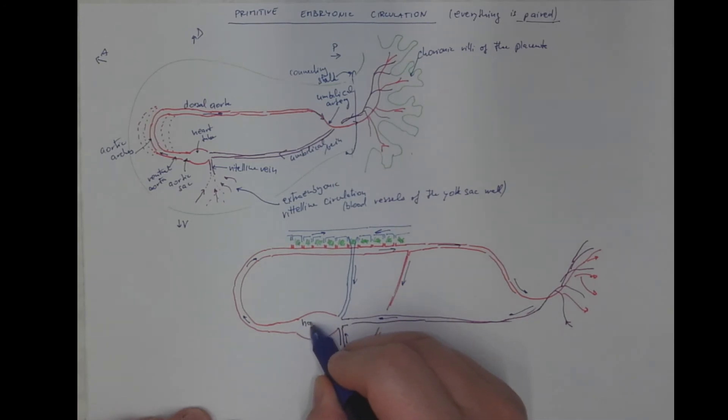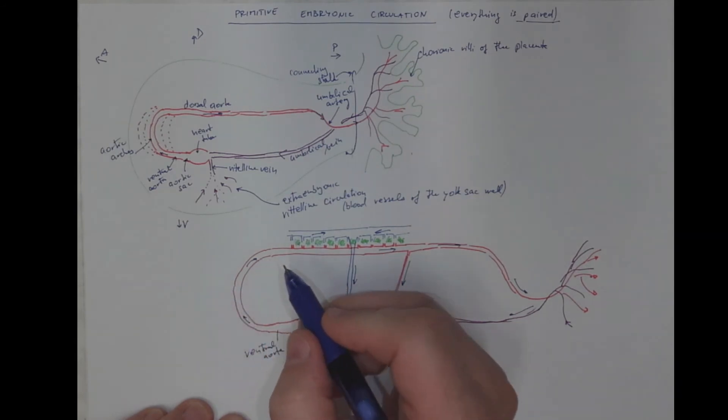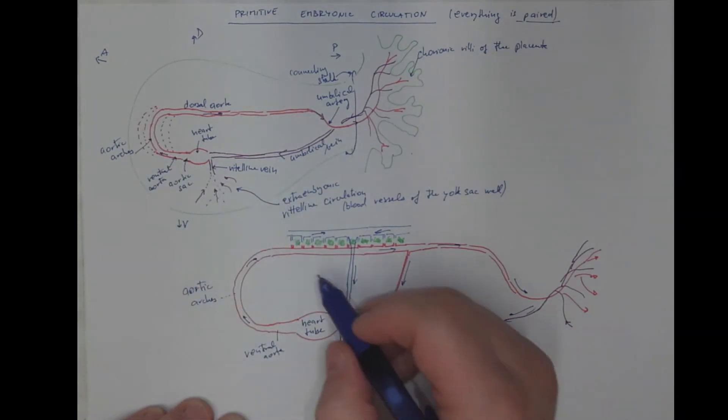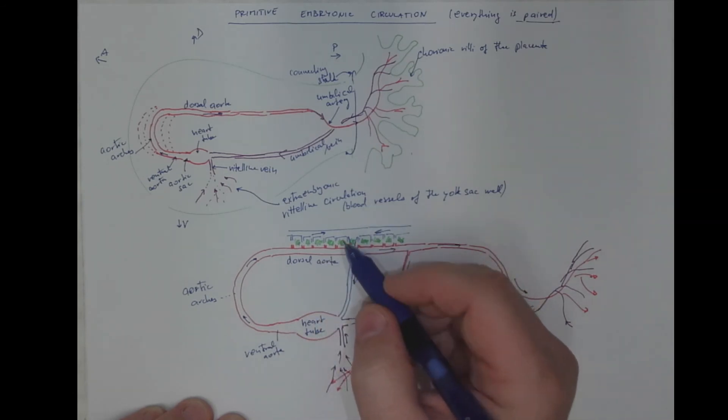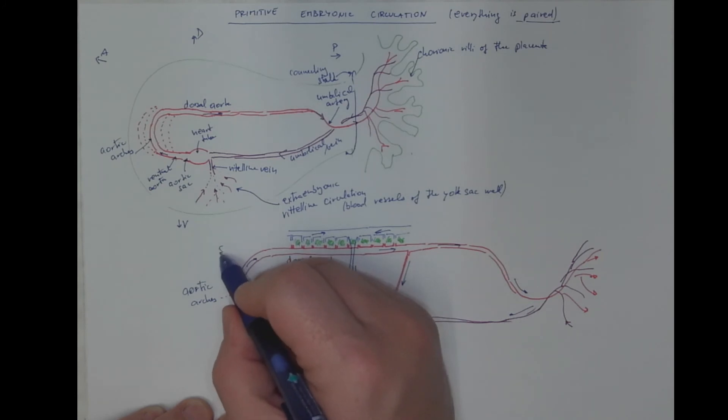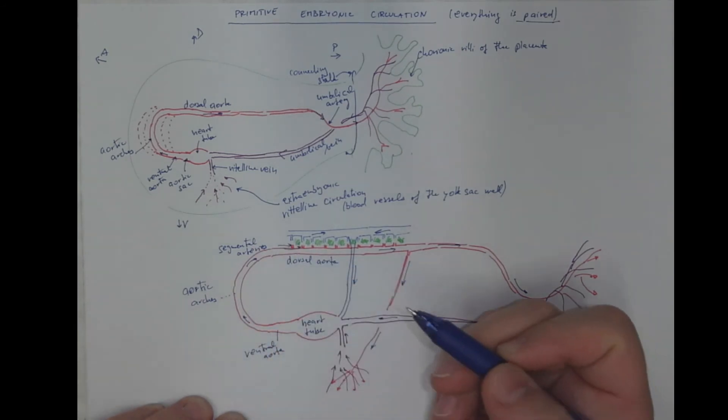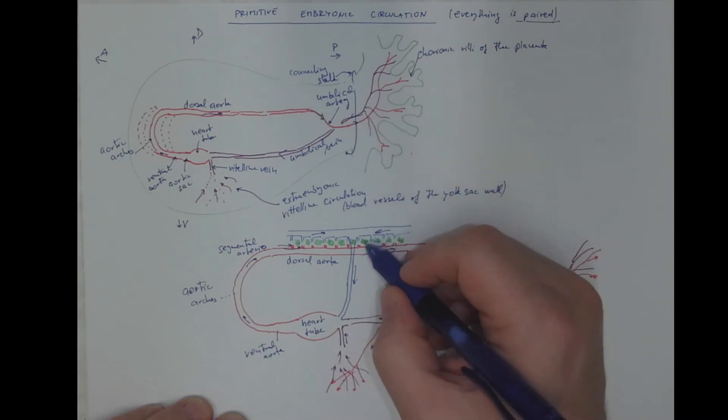This is the heart tube with the ventral aorta. The aortic arch. Actually more arches as we will see later. The dorsal aorta. Giving rise to segmental arteries. Providing nutrition to the body segments called somites.